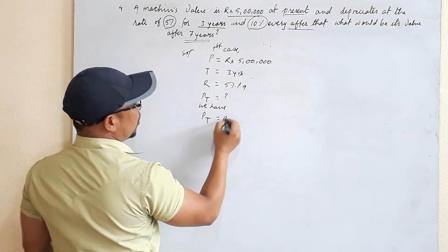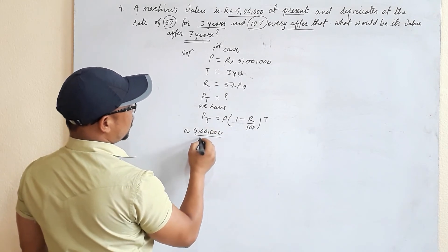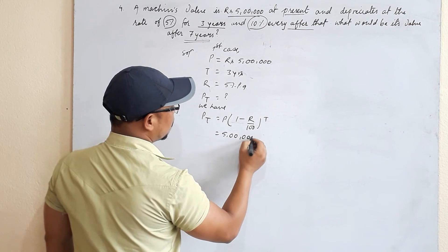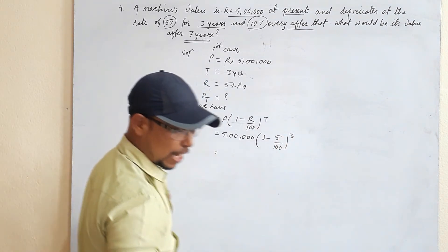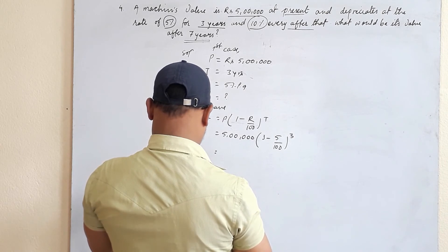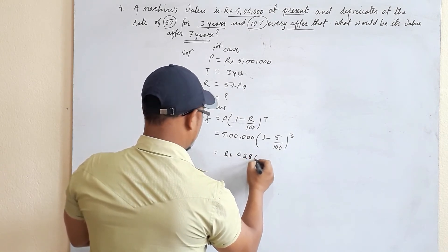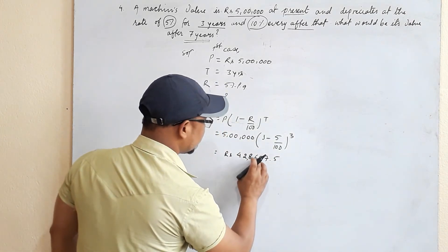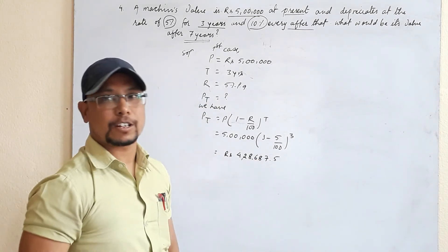Using PT = P(1 − r/100)^T for Case 1: PT = 5,00,000 × (1 − 5/100)^3. Calculating on a calculator gives PT = Rs 4,28,687.50. This value becomes the initial price for the second condition.